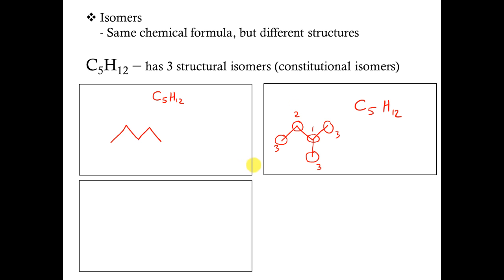At this point, I'd like you to pause the video and try to come up with the third structural isomer for C5H12. Be careful — just because you make it look different doesn't mean that it is different. For instance, two compounds may look different but if you just tilt your head they look the same. What you can do is write the condensed structural formula for each and see if they are identical, because if they are then you haven't made an isomer — it's just the same molecule drawn differently.